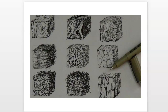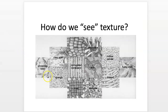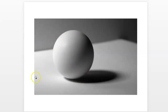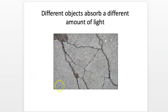When we're looking at texture in the world, how do we actually see it? The answer is the same as seeing everything else — light. What we're seeing is the way light is reacting with the surface or the material. If it's smooth, the light bounces evenly back and gives us a highlight. If it's rough, we're getting different types of shadows.